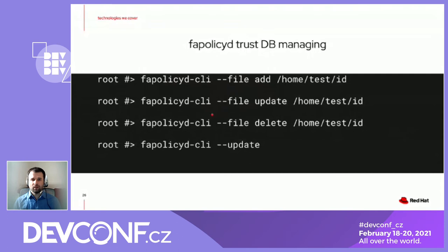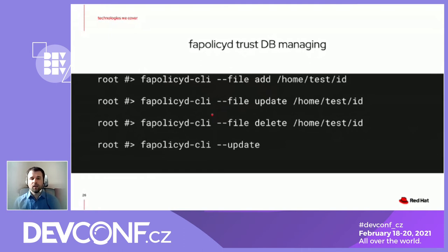The trust database can be managed with the following commands: I can add a file, I can update the file if I need a new version and replace the binary — it won't be trusted anymore because it has changed, so I need to update its attributes in the database. I can also remove the file from the database, and when I make updates, I need to tell the service to reload the database.